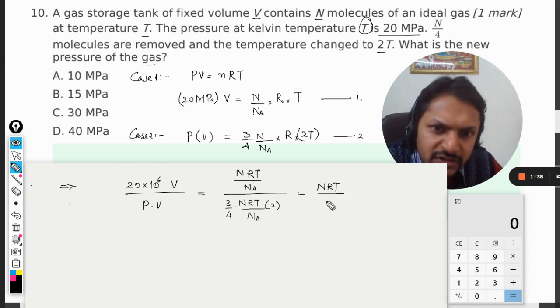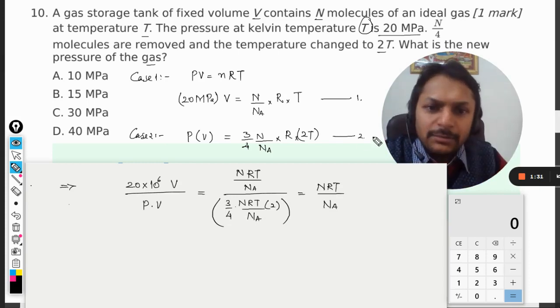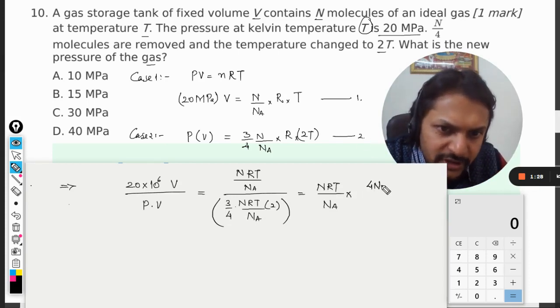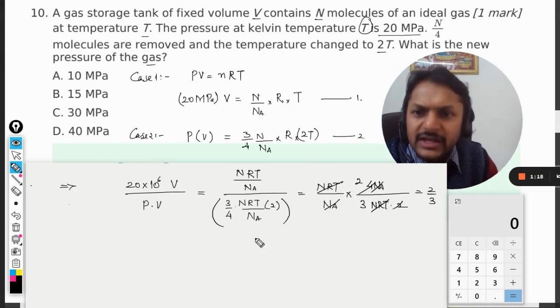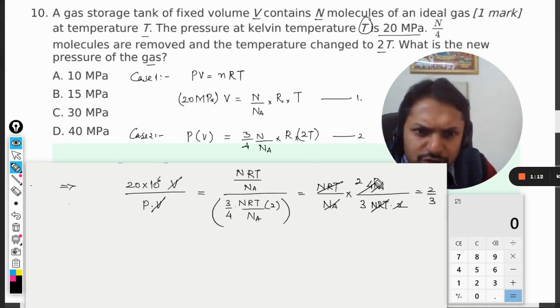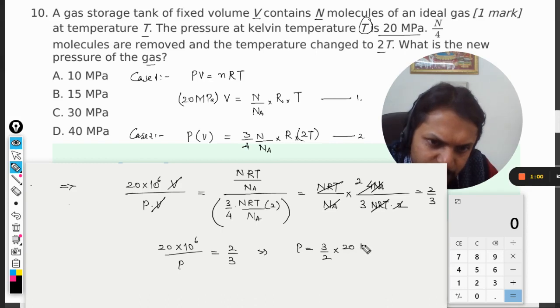The denominator becomes numerator, the numerator becomes denominator. N R T gets cancelled out. This will be 2, so eventually it comes out to be 2/3. V gets cancelled out, so P will be taken to the other side: 20 × 10^6 divided by P = 2/3. This implies P = 3/2 times 20 MPa, which is 10, so our answer is 30 MPa.